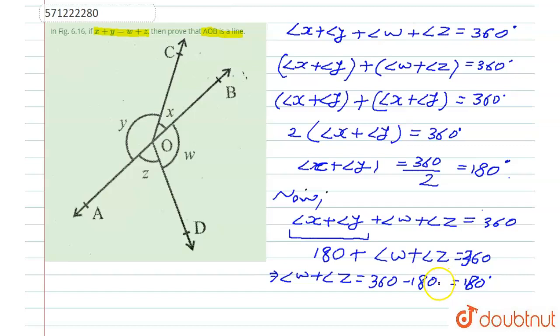And we know from axiom 2 that if the sum of two adjacent angles is 180 degrees, then the non-common arms form a line. So we can say that AOB is nothing but a line.